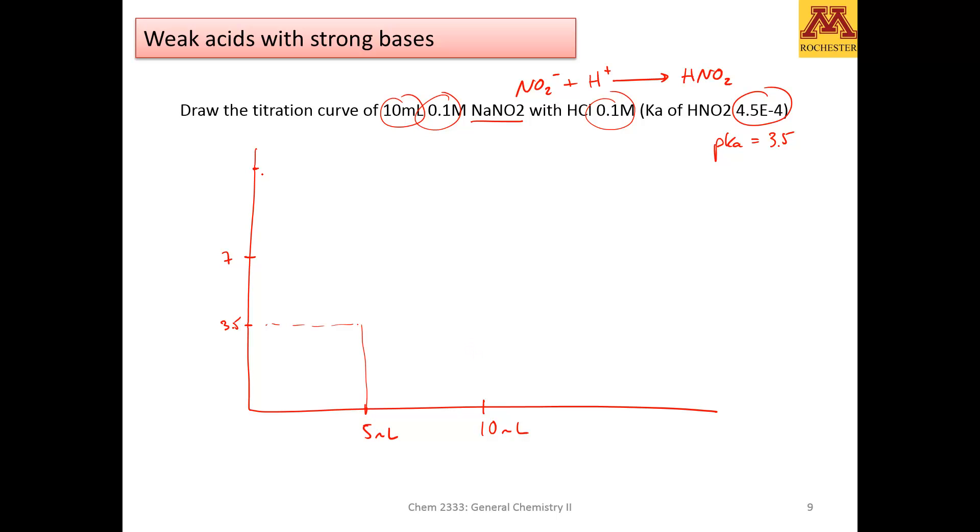So your curve will have to be something like that. Halfway, and then it goes up. Maybe it's not at scale, but this isn't ugly. Let me do it again. So start, buffer, and jump. This is the equivalence point, this is the pH equal to pKa.